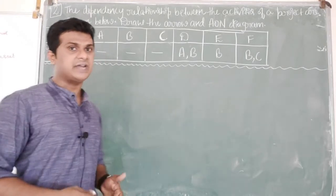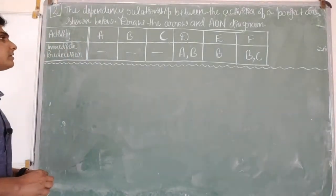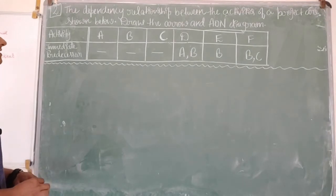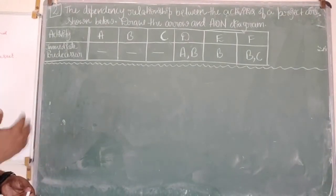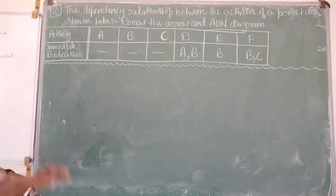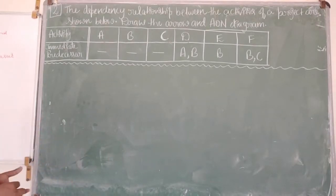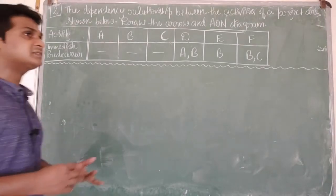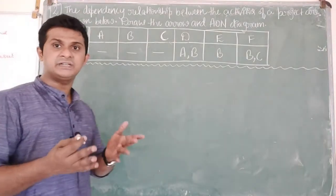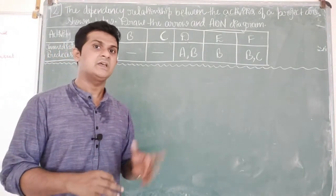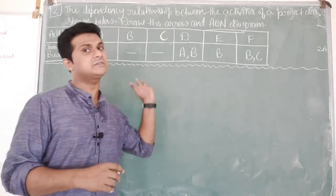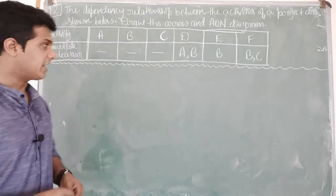Let's see the activities that are given. There are six activities named A, B, C, D, E, and F. They have also given immediate predecessors, which are the preceding activities. Considering this, we have to draw the arrow diagram.